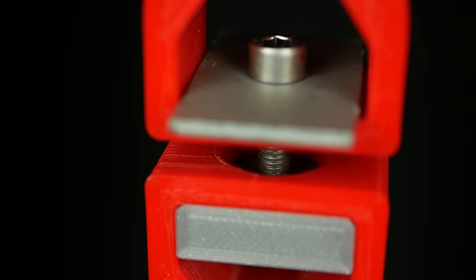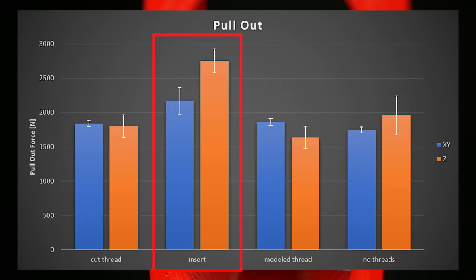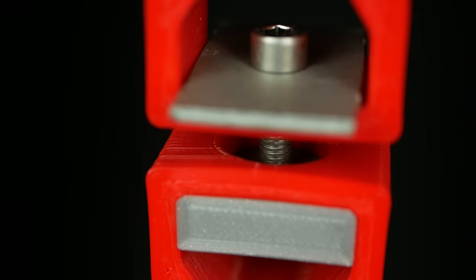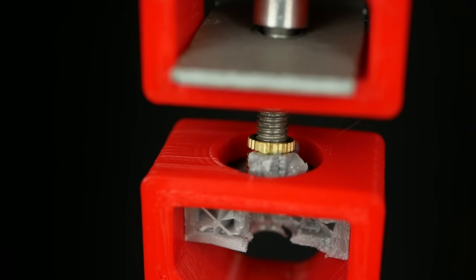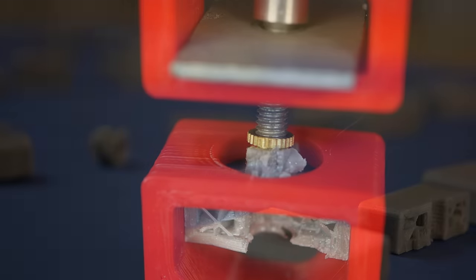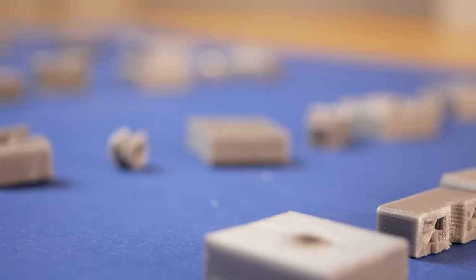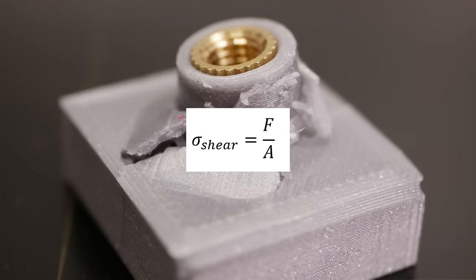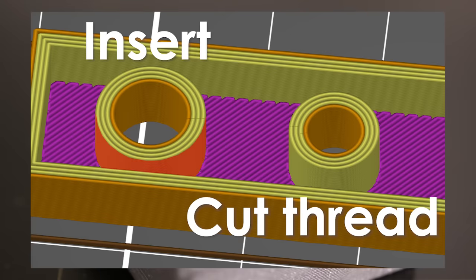The samples with the threaded inserts performed even better and the highest failure load was almost 3000N. Here again the samples failed because the plastic gave way and not the insert ripped out. The horizontal specimens showed the highest failure load because in this orientation the most amount of supporting material is printed. The inserts in general performed better because the shear area where the part failed is simply bigger due to a bigger diameter.